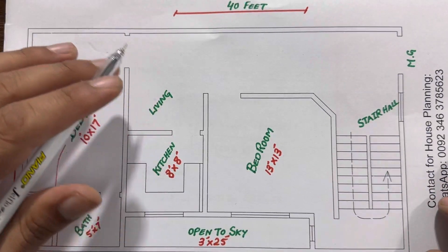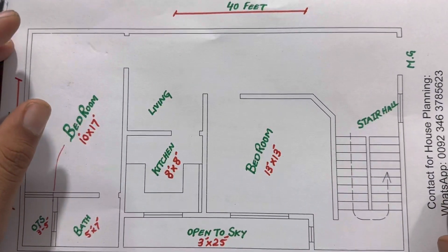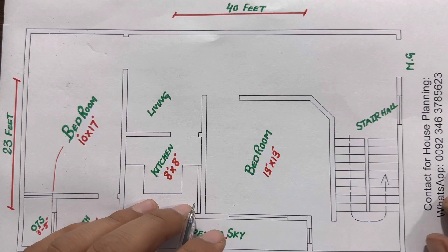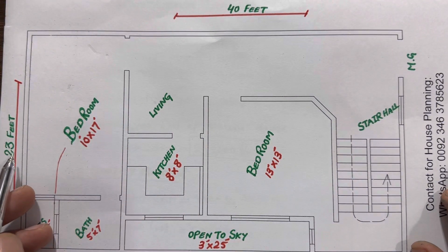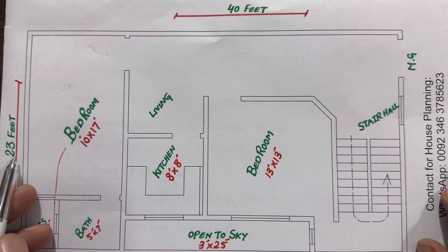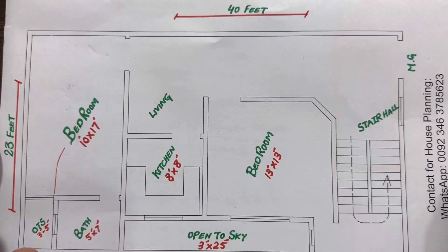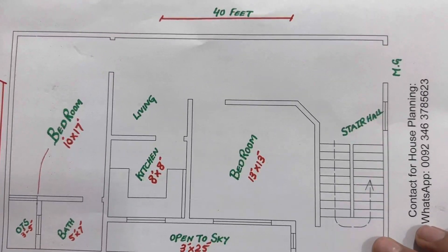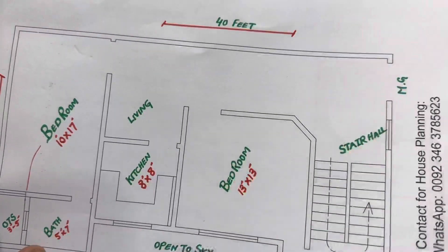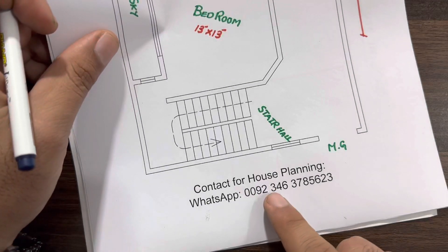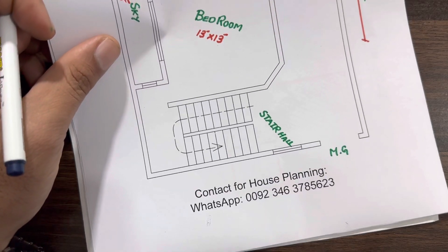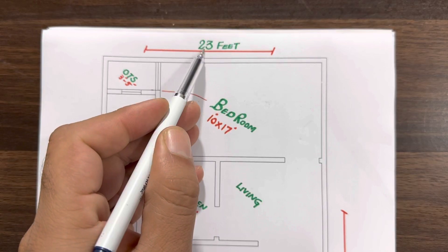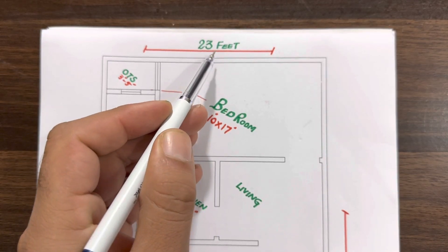Hello guys, welcome back to Civil Engineers YouTube channel. Today in this short video lecture I will guide you for a small house planning in the dimensions of 23 feet by 40 feet. If you need house planning, structural drawing, or 3D animation for any type of building, you can contact me on the WhatsApp number shown — this is a paid service, not free.